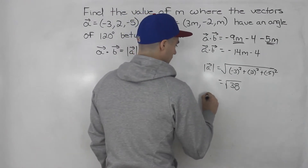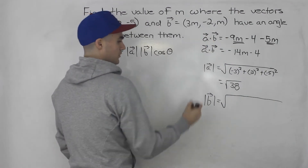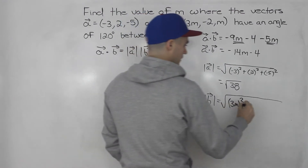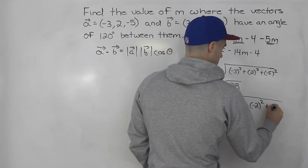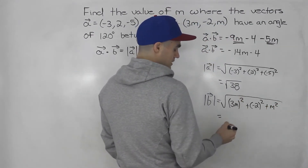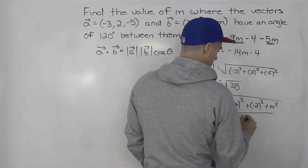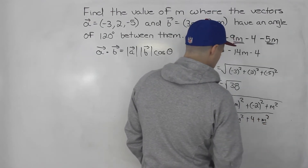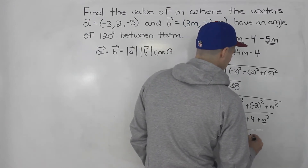For the magnitude of vector b, we take the square root of all of these components squared. So we've got 3m — you have to make sure you put in brackets — squared, plus negative 2 squared, plus m squared. For 3m squared, you have to distribute that exponent inside the bracket, so you'd have 9m squared, plus 4, plus m squared. These are like terms, so this would be the square root of 10m squared plus 4. That is the expression in terms of m for the magnitude of b.